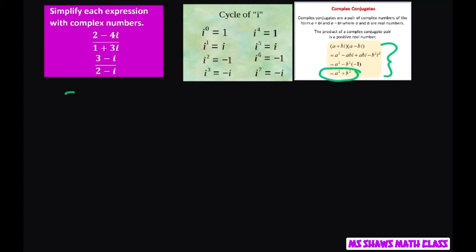So basically, if I have 2 minus 4i divided by 1 plus 3i, the main thing you need to know is 1 plus 3i is 1 plus square root of negative 1, and from previous lessons we know that we cannot have a radical in the denominator.